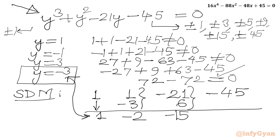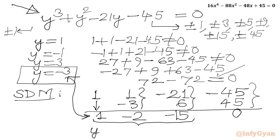Minus 3 times minus 15 is plus 45; adding gives 0. So we have the coefficients for the quadratic equation, and I can write the quadratic as y² minus 2y minus 15 equals 0.